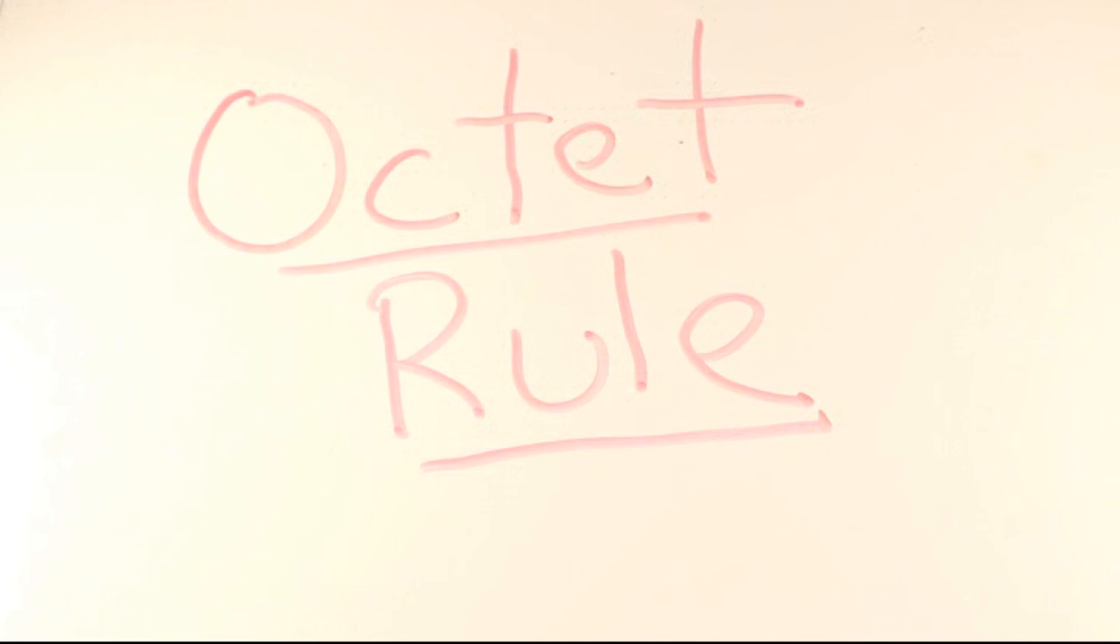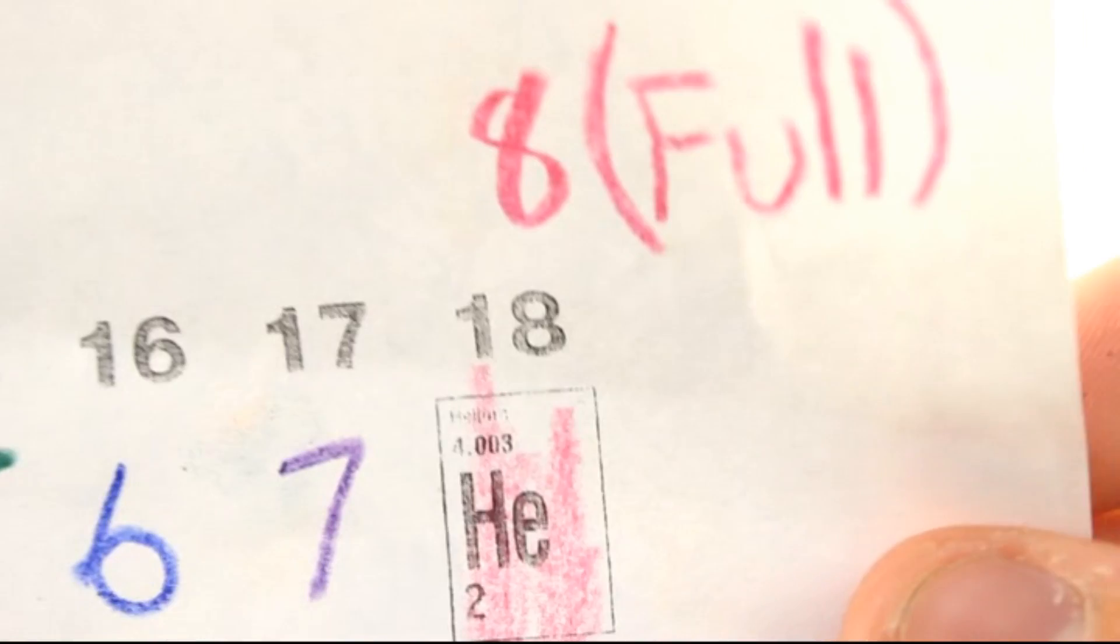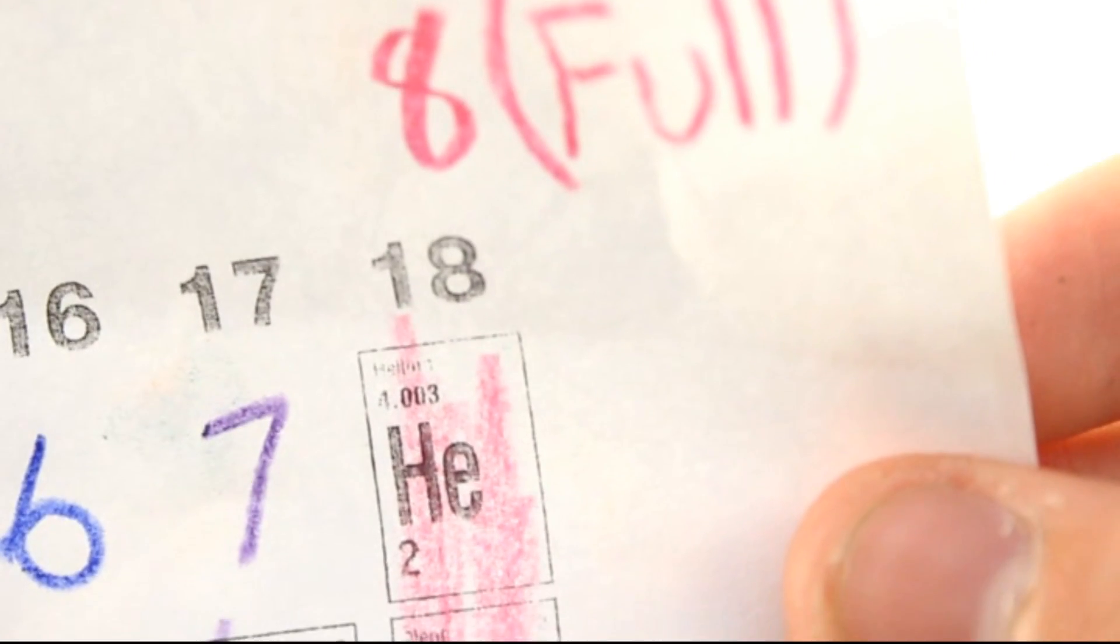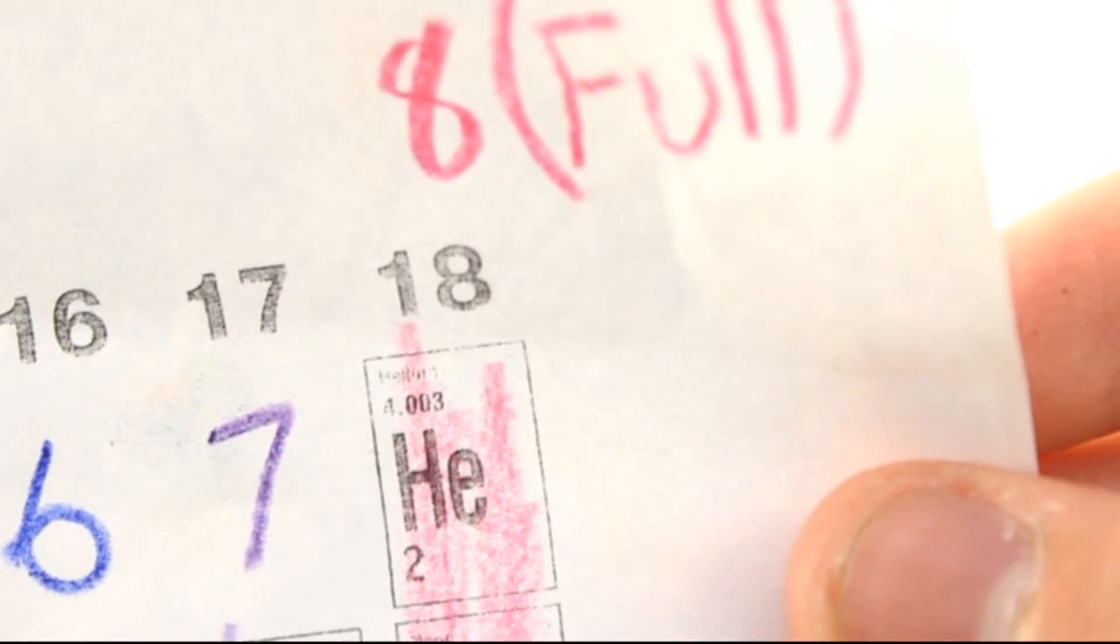The exceptions are hydrogen and helium, which are full with just two. That is why helium is over here with all the eights. This is really the full column, and helium is full with just two.